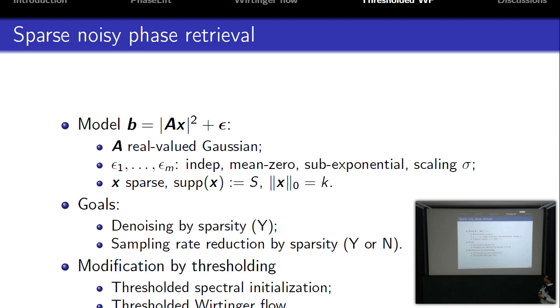We assume the noise is independent with sub-exponential tails. For x, we assume x is sparse with support S and sparsity k. Why is it helpful if we know the signal is sparse? First, we use the sparse prior to denoise. Second, we can reduce the sampling rate. So the answer is yes. We need to modify the standard workflow to achieve these goals.